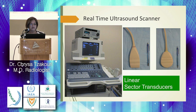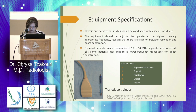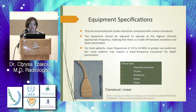Nowadays we have real-time ultrasound scanners with different transducers. According to the 2013 American Institute of Ultrasound in Medicine practice guidelines, thyroid and parathyroid studies should be conducted with a linear transducer. The equipment should be adjusted to operate at the highest clinically appropriate frequency, realizing there is a trade-off between resolution and penetration. For most patients, mean frequencies of 10 to 14 MHz are preferred, but some patients may require a lower-frequency transducer for depth penetration.